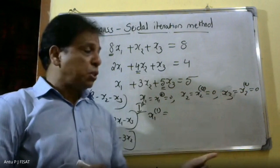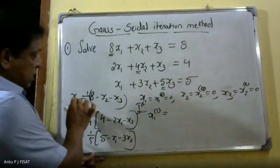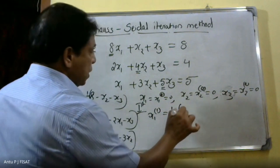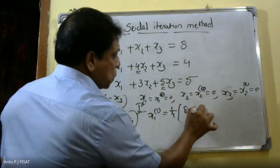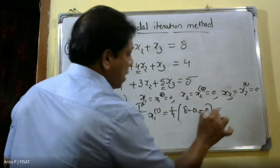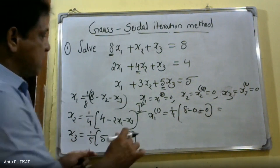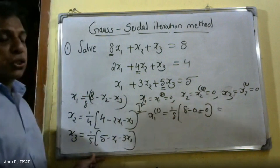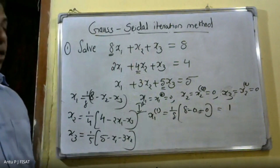Using the first equation: x1 equals (1/8) into (8 minus x2 minus x3). Substituting x2 equals 0 and x3 equals 0, we get x1 equals (1/8) into 8, which gives x1 raised to 1 equals 1.